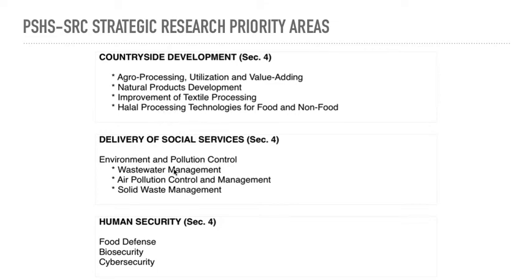Environment and pollution control — if you have ideas for wastewater management or air pollution control, this can also qualify here. And for Research 1, the deliverable is a proposal, so these topics can still qualify.